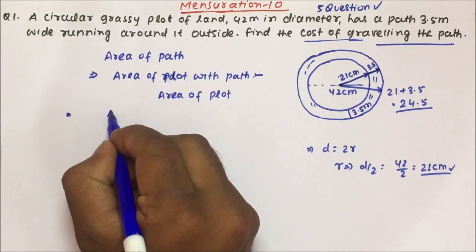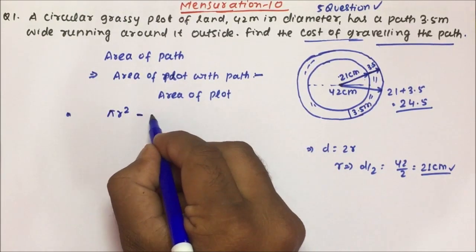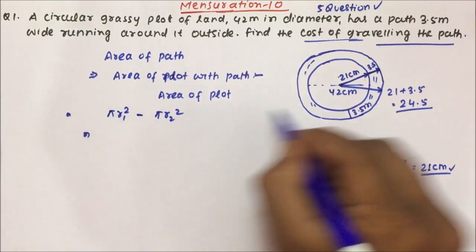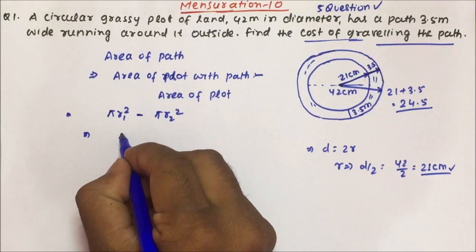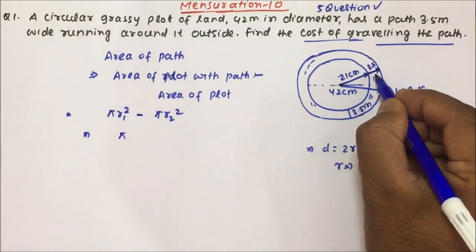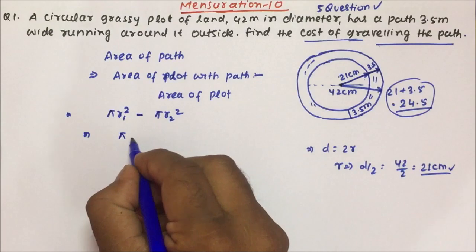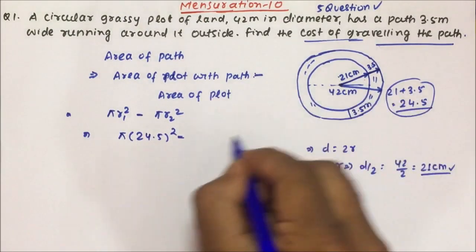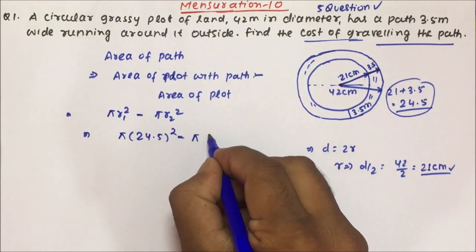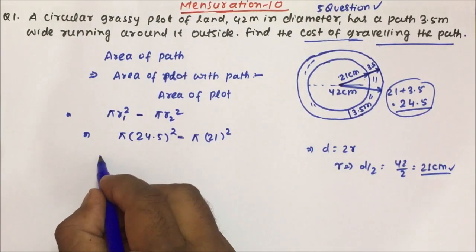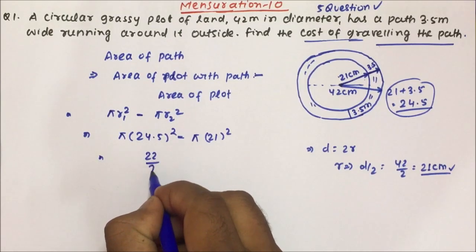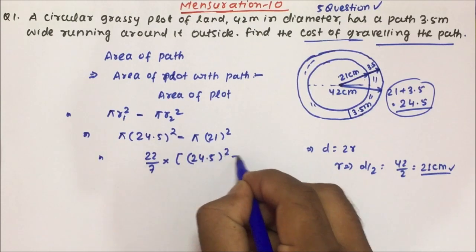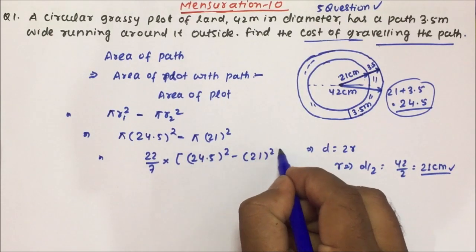The area of the plot with path is π R², and the area of the plot is π r². So the area of the path is π(24.5² − 21²). Taking π = 22/7 as common, we apply the formula a² − b² = (a + b)(a − b), giving us 22/7 × (24.5 + 21) × (24.5 − 21).